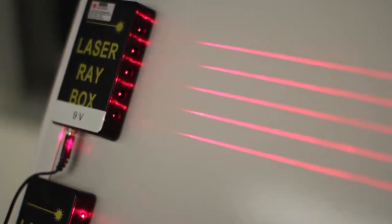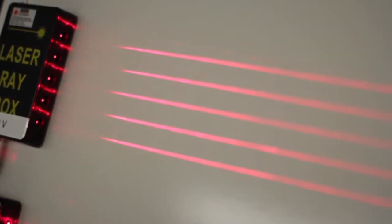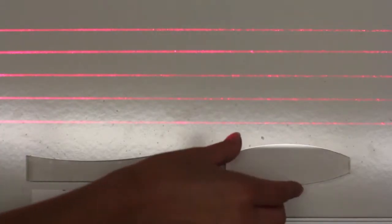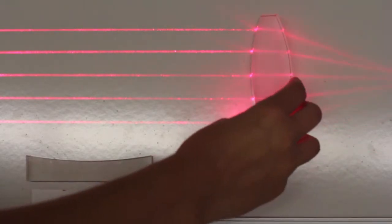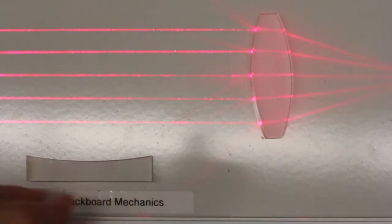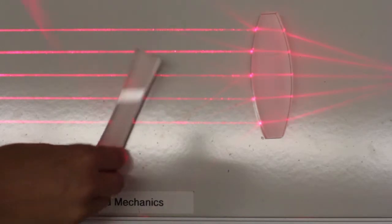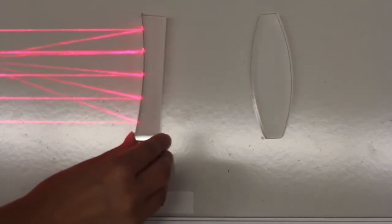We will make use of an apparatus known as blackboard optics. It uses laser beams to represent rays of light, which convey the direction of propagation. We can then place a variety of optical devices, mirrors, lenses, and more, in the path of the light rays and watch how they are affected.